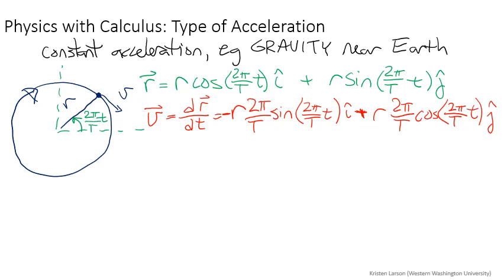Remember, finding acceleration. So the acceleration vector is just another time derivative. We'll play this game again and we get negative r. We're going to take another derivative so we're going to have a 2π over the period that comes out again.